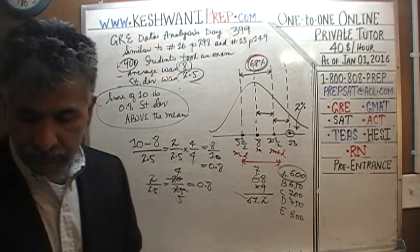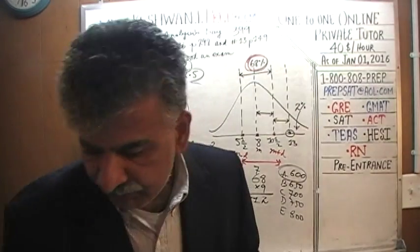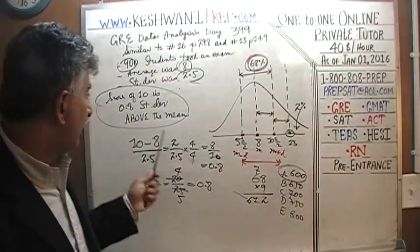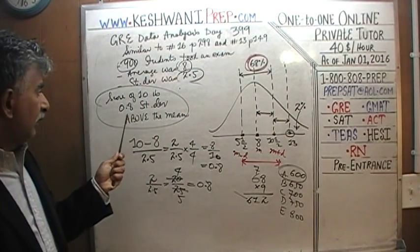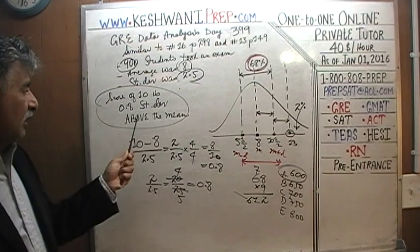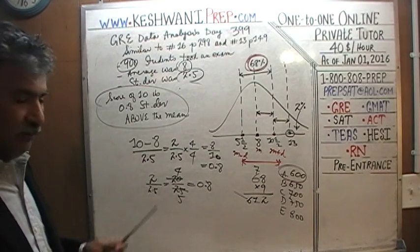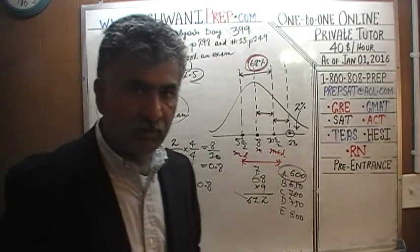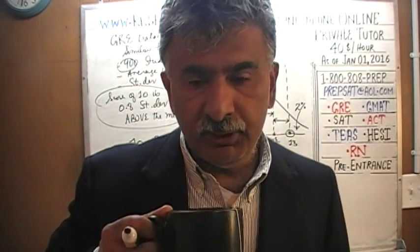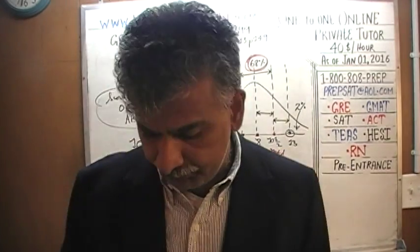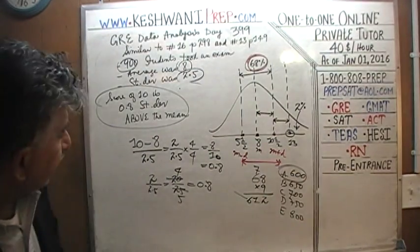If it's a multiple choice question, pay attention to the words 'above' or 'below.' One answer might say 0.8 standard deviations above the mean, another might say 0.8 standard deviations below the mean. This student is above the mean because his score is 10 and the average is only 8.